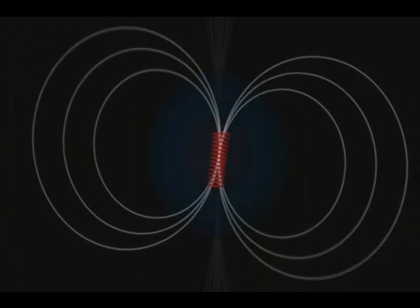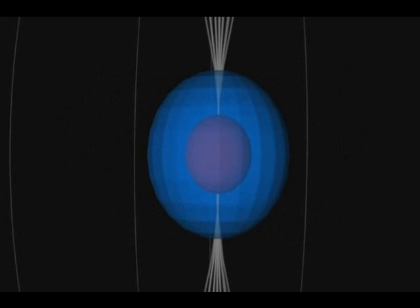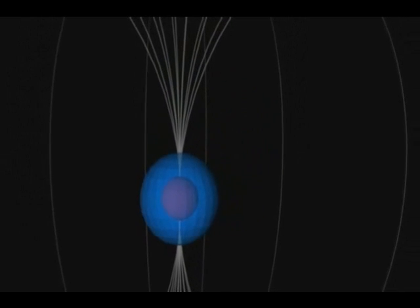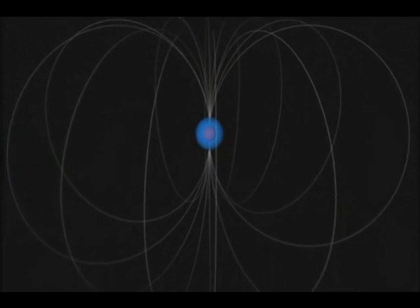The same thing happens on a larger scale with the Earth's core. Its magnetic field gives our planet its north and south poles. It also extends far out into space. It's called the magnetosphere. And this is what protects us from the solar wind.